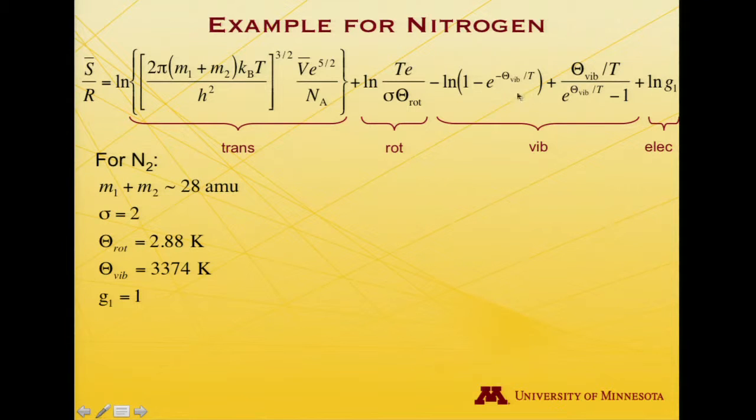In the next two terms, the only thing we need to know is the vibrational temperature. And again, that's something we've had on prior videos as well as you can find it in tables. 3,374 Kelvin. And lastly, you need to know the ground electronic state degeneracy. And it's 1 for nitrogen. It is not a degenerate state. It's just non-degenerate.